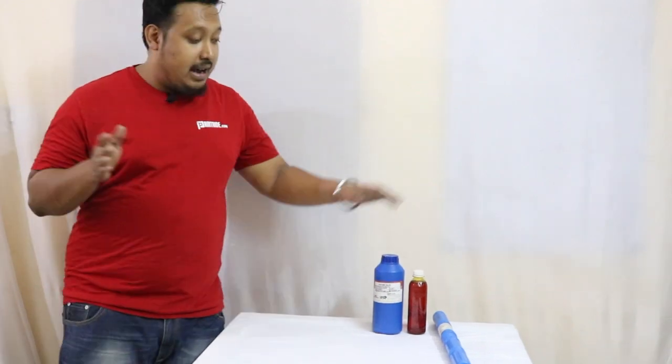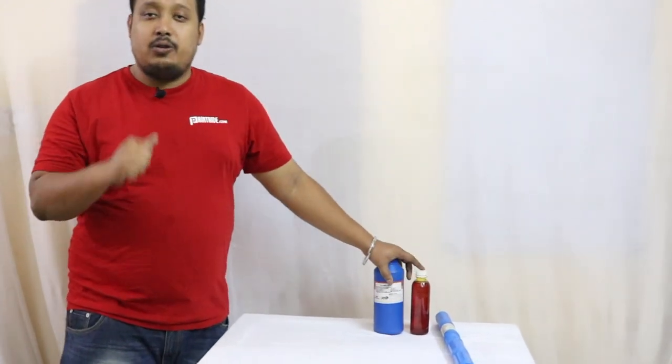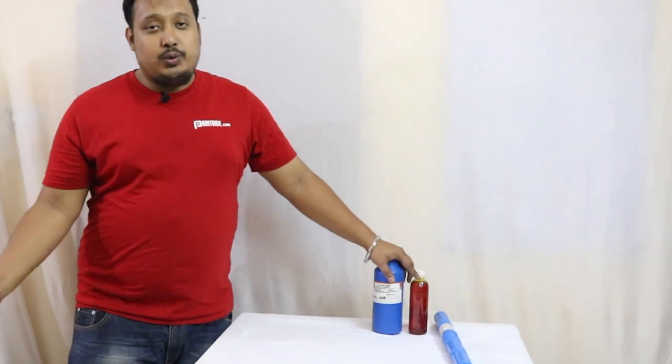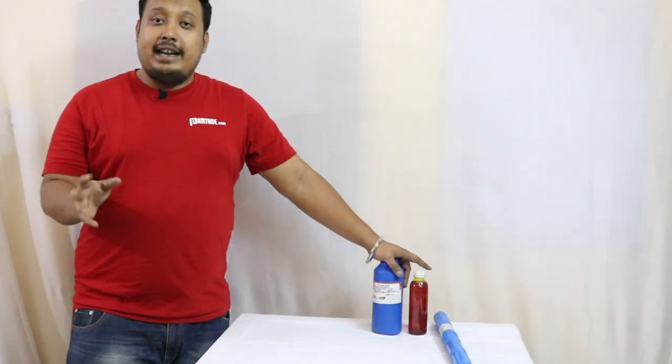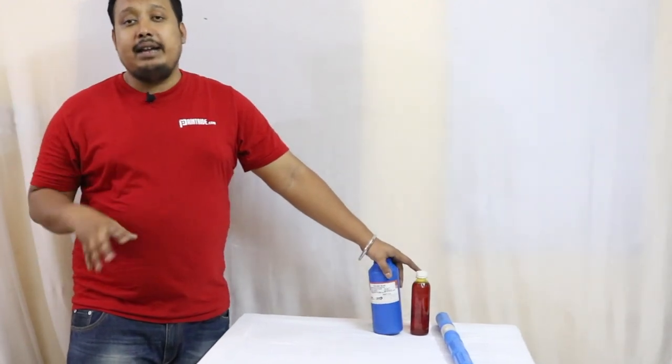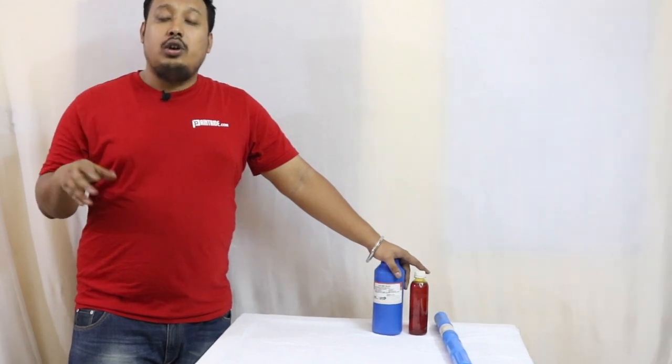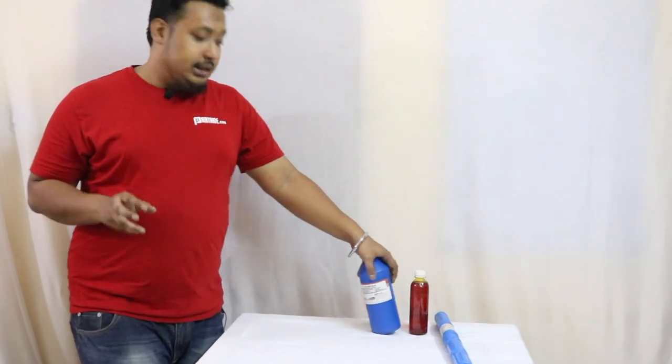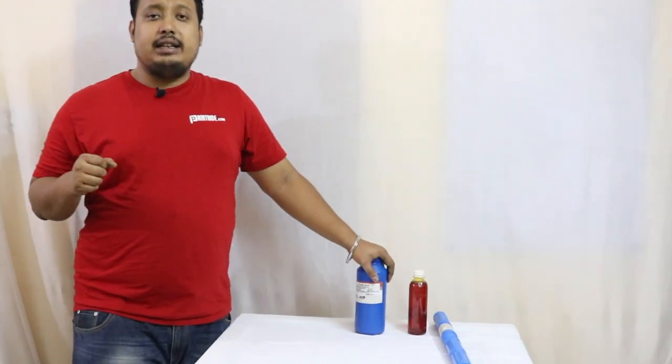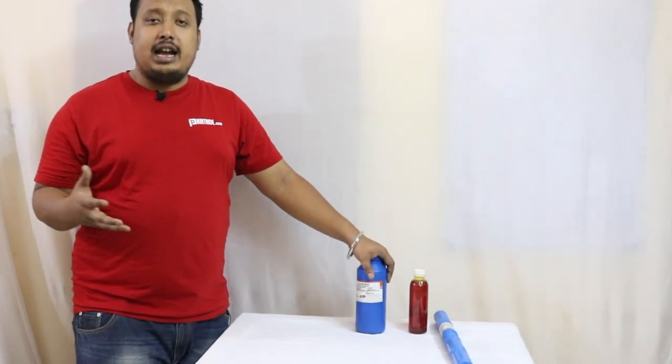Suppose you have this emulsion and your timing is 2 minutes in your exposure unit. If you switch to another emulsion, your time might vary to 6 minutes. You'll have to track your time again. It's better to stick with one emulsion so you can know the timing properly for everyday exposing.